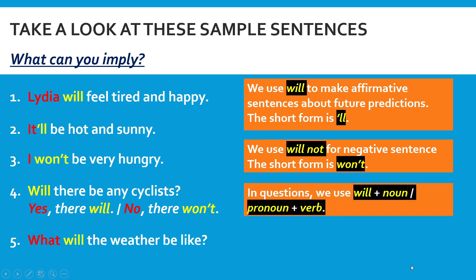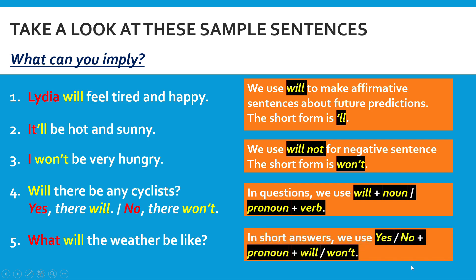In questions, we use 'will' plus noun or pronoun together with a verb. Remember this formula when it comes to making questions using 'will' or 'won't'. In short answers, we use 'yes' or 'no' together with a pronoun followed by 'will' or 'won't'. When you want to make WH questions, we still use the same formula — 'will' plus noun or pronoun together with verb. For short answers, you only use 'yes' or 'no' together with pronoun followed by 'will' or 'won't'.